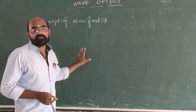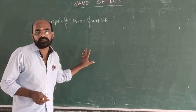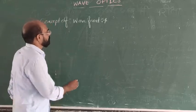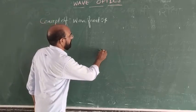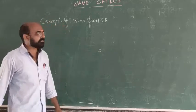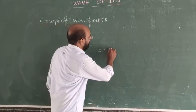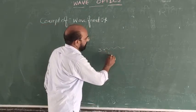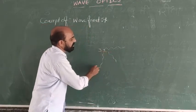Wavefront is the locus of other points. Let us suppose the source of light is situated here. It will emit light waves in all possible directions, in all possible directions.